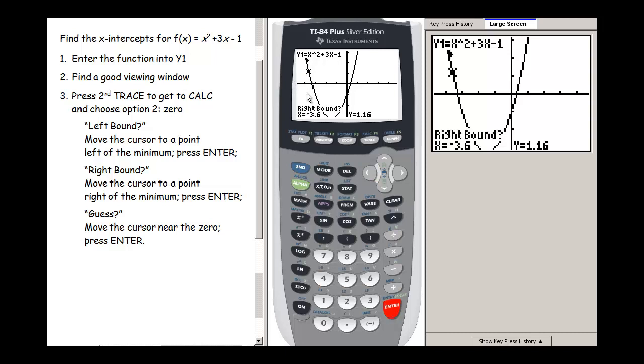Then it asks me for a right bound, so I'm going to move to the right. I'm definitely to the right of it now. Here's my x-intercept and I'm over here to the right of it.